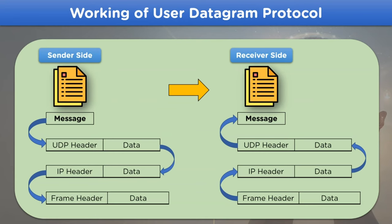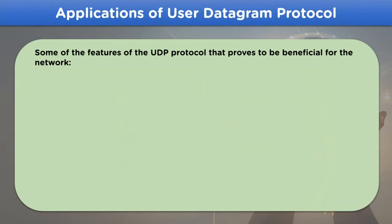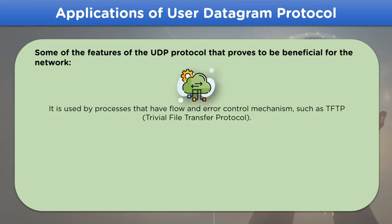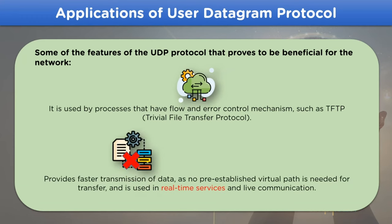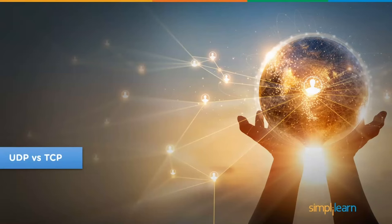Now let's move on to the applications of UDP protocol. UDP provides flow control and error control mechanisms to network models such as TFTP. It also provides faster transmission of data, as there is no pre-established virtual path needed, so it is used for real-time services, live communication, and gaming services.